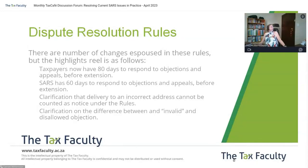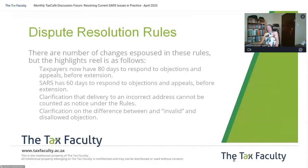Whereas a disallowed objection is one where SARS says they disagreed with you on the deductibility of the expense — in other words, SARS actually issues a judgment call on the technical nature of the objection you submitted. In an invalid objection, they say they can't complete your objection because there's missing information.